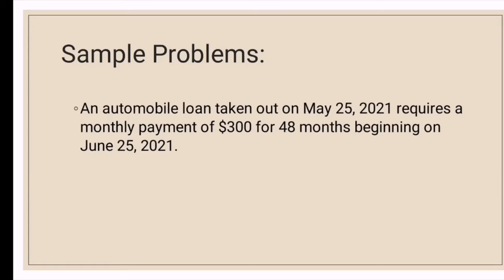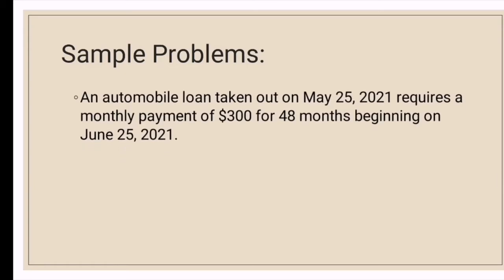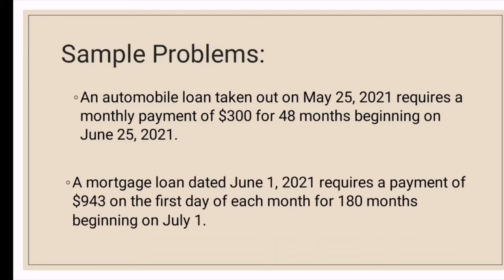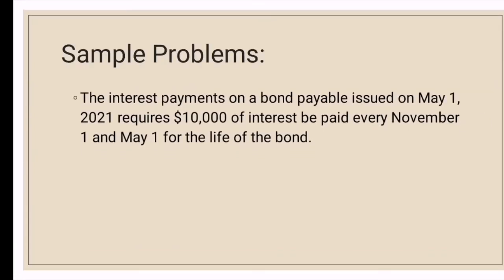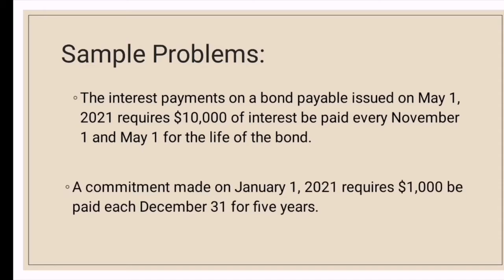Here are sample problems where ordinary annuity is used. First, an automobile loan taken out on May 25, 2021 requires a monthly payment of $300 for 48 months beginning on June 25, 2021. Another, a mortgage loan dated June 1, 2021 requires a payment of $943 on the first day of each month for 180 months beginning on July 1. The interest payments on a bond payable issued on May 1, 2021 requires $10,000 of interest to be paid every November 1 and May 1 for the life of the bond. The payment made on January 1, 2021 requires $1,000 to be paid each December 31 for 5 years.